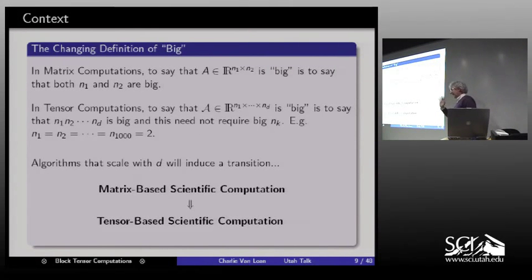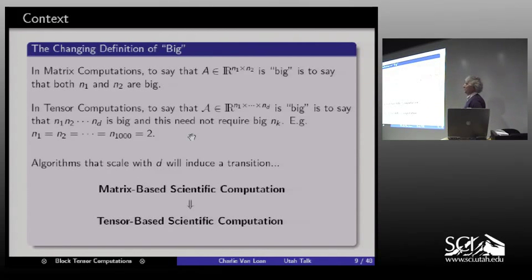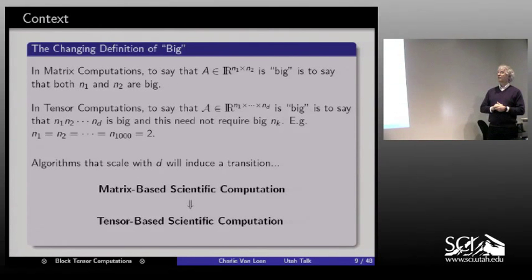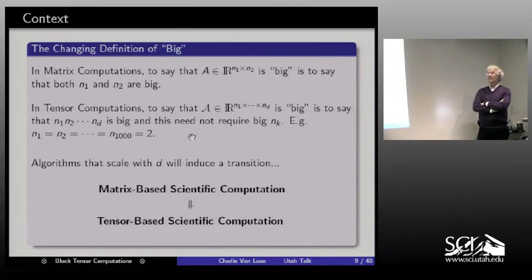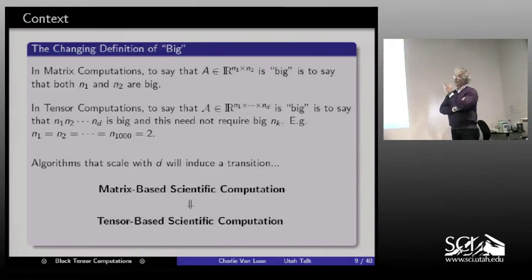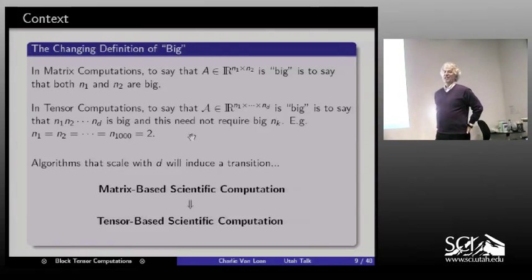Let's talk about 'big,' because everybody nowadays is working on algorithms that scale. In matrix computations, big means a big matrix — rows times columns is large. In tensor computations those stats are important, but probably more important is the dimension D. For example, if I have a 100th or 1,000th-order tensor that is 2 in each direction, no computer in the world can store it. This is big not for reasons of N but for reasons of D.